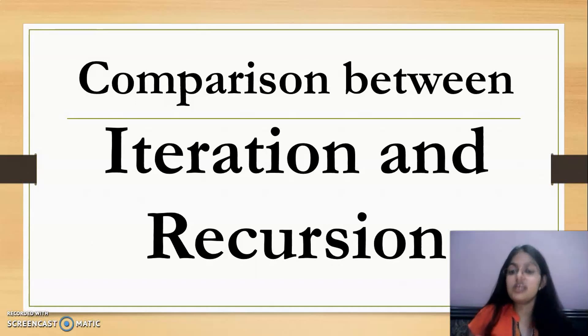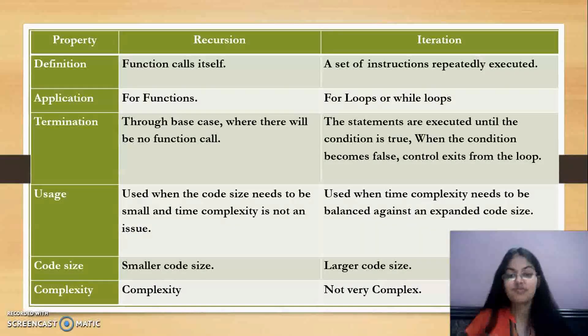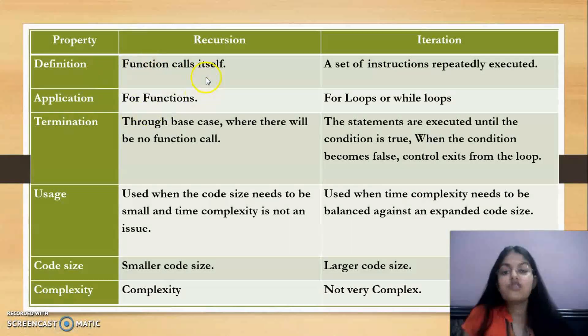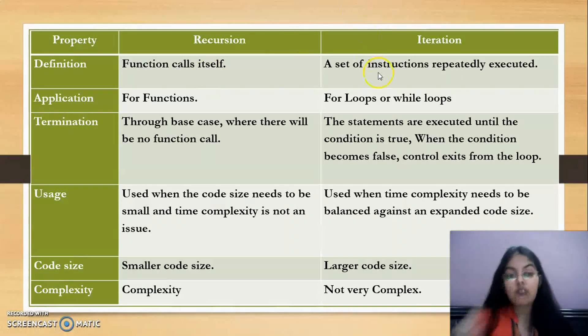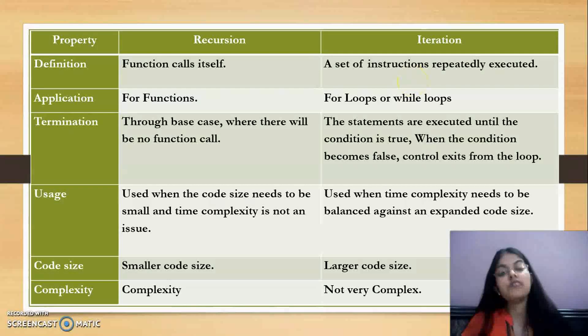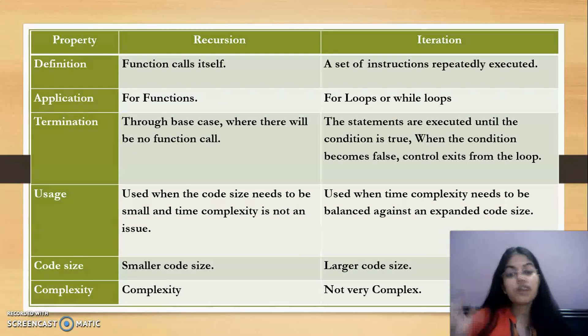Now a question arises - is there any difference between iteration and recursion? Because in iteration, we repeat statements multiple times through looping like for loop or while loop. In that also there is repetition, in recursion also we execute repeatedly. But there is a difference between iteration and recursion. The first difference is in recursion, function calls itself. But in iteration, we have statements that execute multiple times. If you have simple statements executing repeatedly, that will be considered as iteration. But if a function is calling itself or another function repeatedly, then that will be considered as recursion.